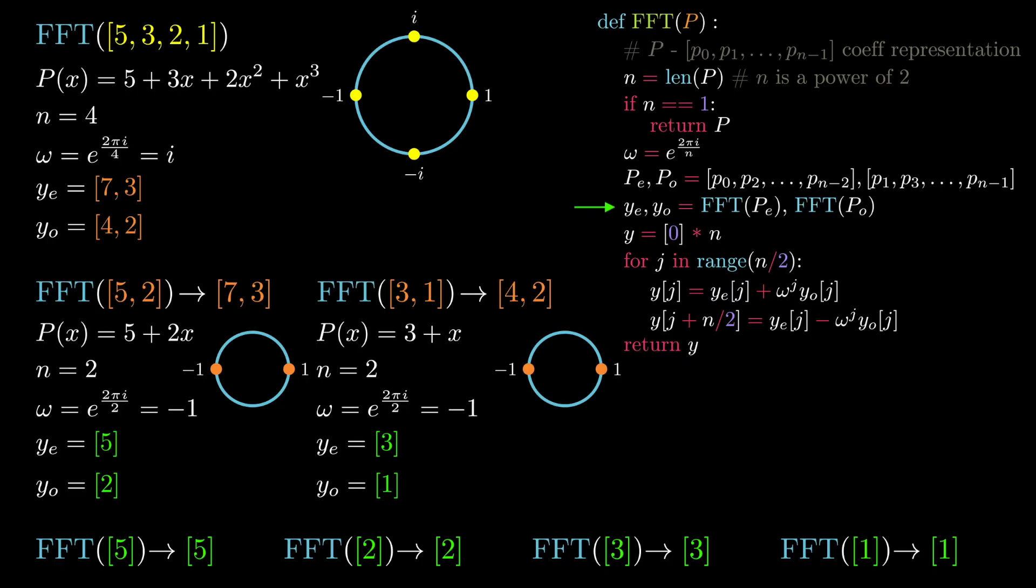Now when we define our y list, it has four values, all of which are initially zero. We then proceed into the for loop. In the first iteration, the first line assigns the zeroth index of y to the zeroth index of ye plus omega to the power of zero times the zeroth index of yo. This is essentially evaluating the original polynomial at the first root of unity omega to the power of zero and the expression gives us the value 11.